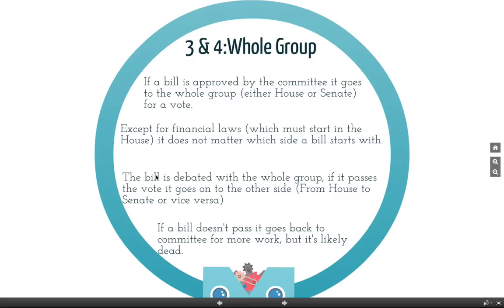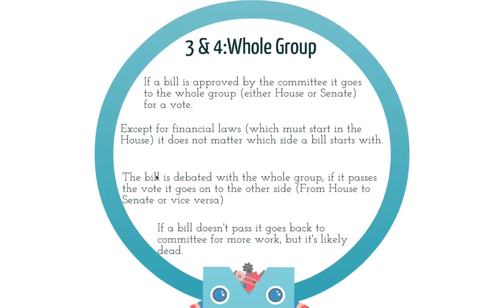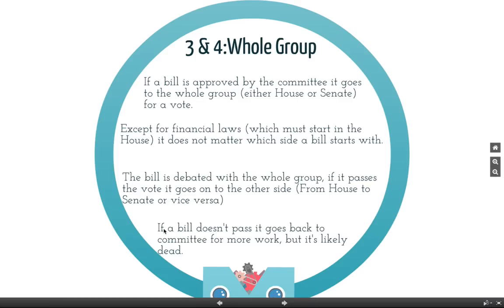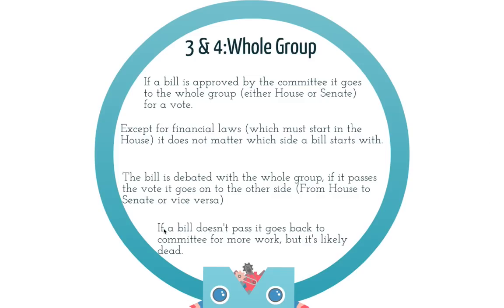The bill is debated within the whole group. For example, with the texting bill — after the Public Safety Committee discusses it and approves it, they bring it to the whole group. If the entire House of Representatives votes it in by a majority vote, it would then go to the Senate for the same process, going through a majority vote there as well. If a bill doesn't pass the whole group, it goes back to committee, but that doesn't really happen often — if it doesn't pass the whole group, it's probably dead.